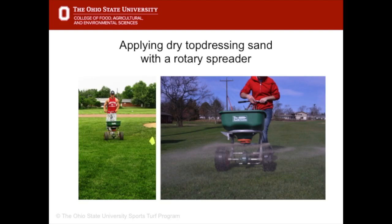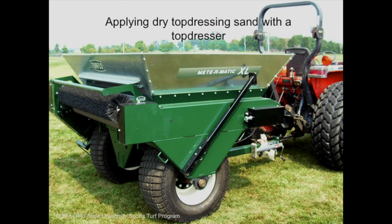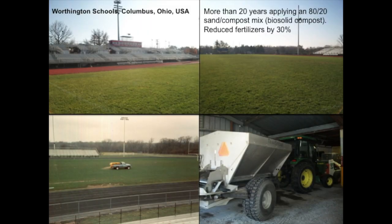For larger areas, dry materials, namely sand, can be applied with a rotary spreader. There are many top dressing machines available, some belt driven, some with a rotating disc. Larger machines obviously hold more material in the hopper and so need to be refilled less frequently. Here is an example of a school district that has been applying an 80-20 sand compost top dressing mix for many years. The added benefit of including compost is that they have reduced their fertiliser input by about 30%.